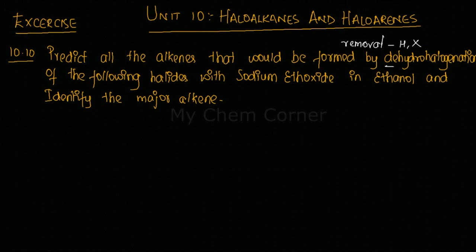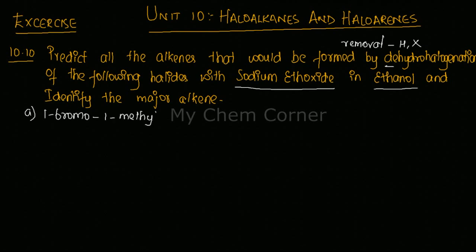The halide is given to us and we perform dehydrohalogenation to form alkenes. The reagents required are sodium ethoxide and ethanol. The first compound given to us is 1-bromo-1-methylcyclohexane, which is our starting material from which we will prepare alkenes using sodium ethoxide.